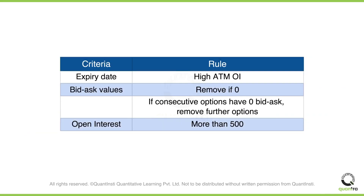In summary, the key parameters for screening options are: select the expiry date with high ATM open interest; remove options which have zero bid or ask price, and if consecutive options have zero bid or ask, remove all options after that; and keep options with open interest more than 500 for SPX, or having notional exposure more than $200 million.